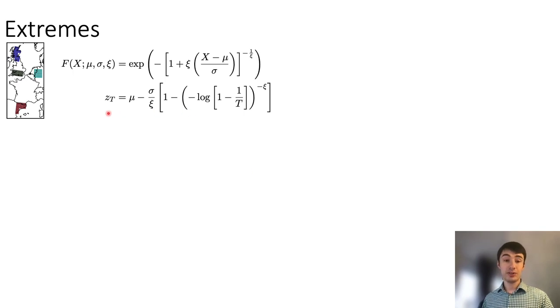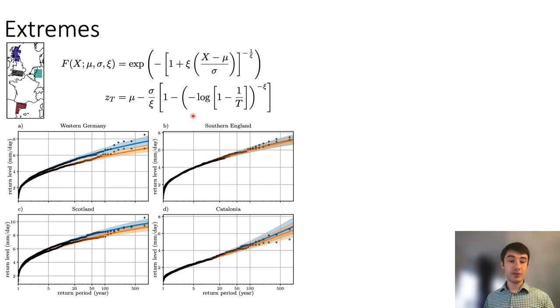We look at DJF average precipitation over Europe and fit a generalized extreme value distribution, which then allows us to compute return levels. I'm showing this first for a number of regions that are shown in the map here at the top, where on the x-axis here at the bottom you see the return period in years, how often one would expect the event of a given magnitude where the magnitude is given on the vertical axis. Again, the blue lines represent the unperturbed ensemble and the orange lines represent the perturbed ensemble.